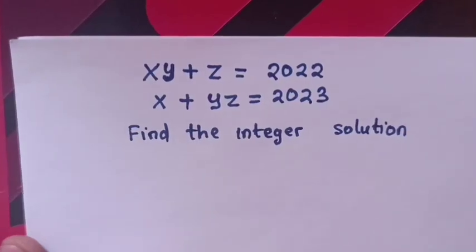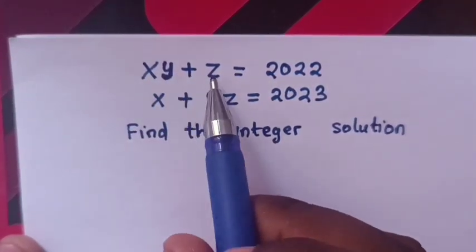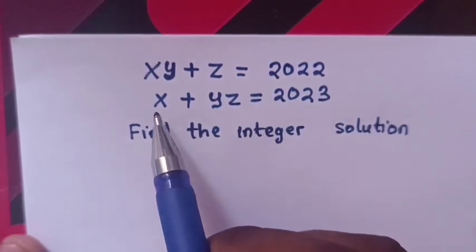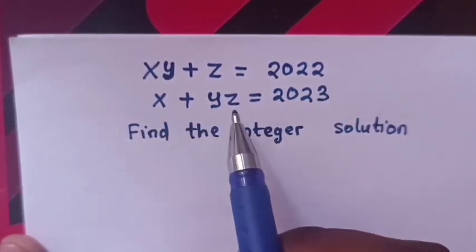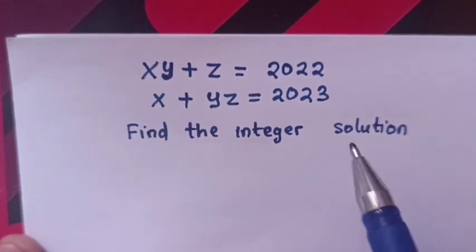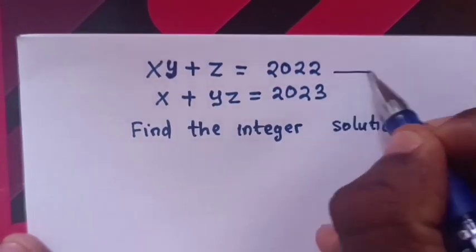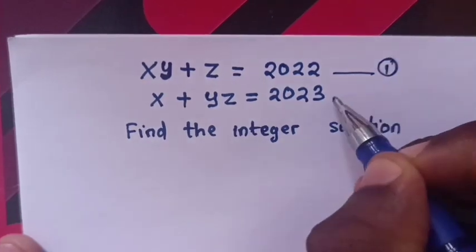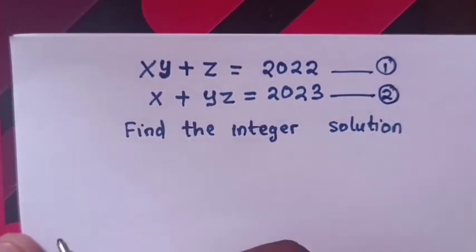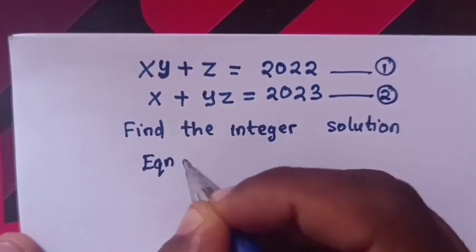Hello. To solve the system of equations: xy + z = 2022 (equation 1) and x + yz = 2023 (equation 2), find the integer solution. We let the first equation be equation 1 and the second be equation 2.